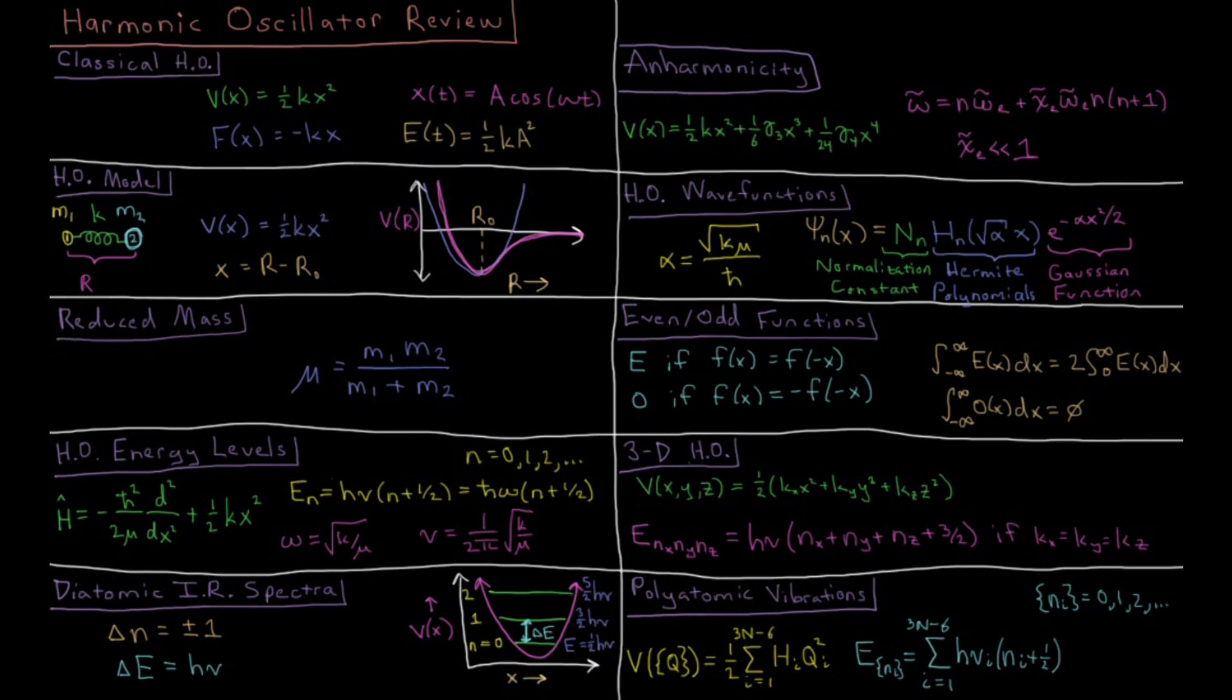This video is a review of the harmonic oscillator in quantum mechanics. We start with the classical harmonic oscillator where we have a potential energy function defined as one half of some constant k times our position variable x squared.